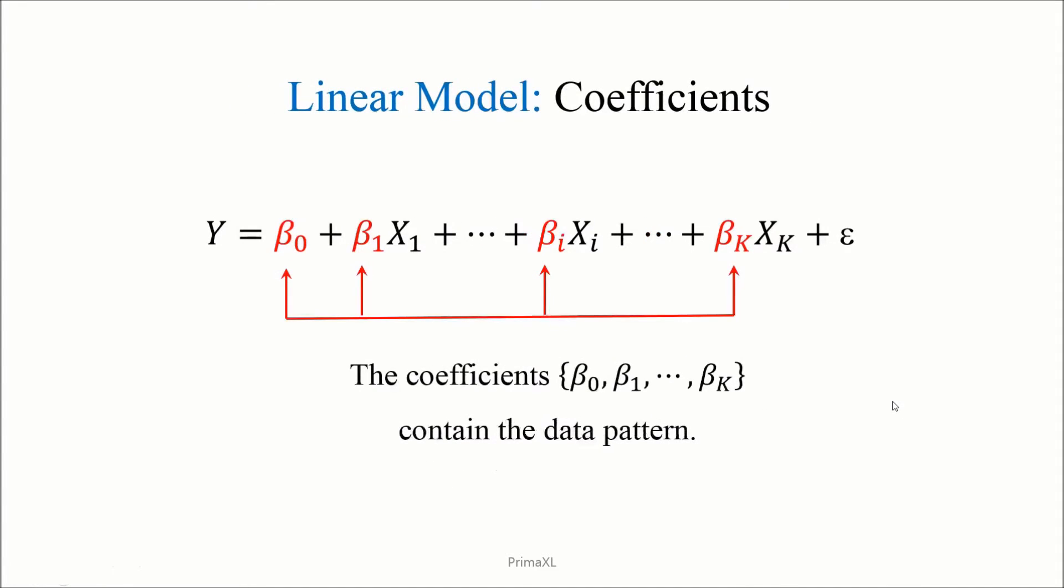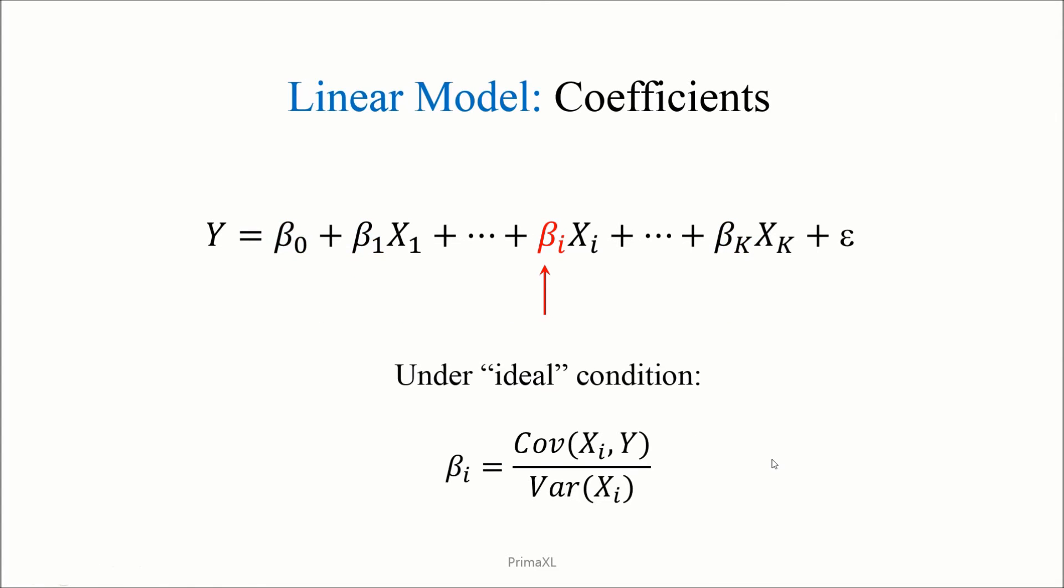We will use the Greek letter beta to denote the model parameters or coefficients. The beta coefficients contain the pattern implicit in the data. Under the ideal condition where the explanatory variables x1 through xk have exactly zero correlation among themselves, the values of beta 1 through beta k can be calculated with this expression.